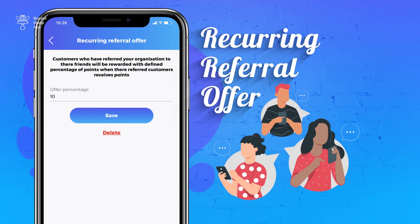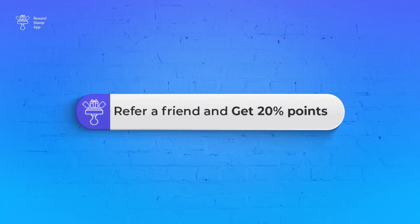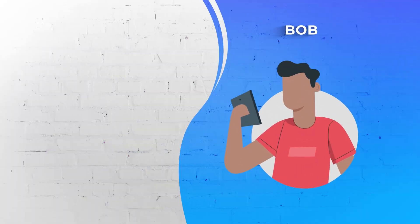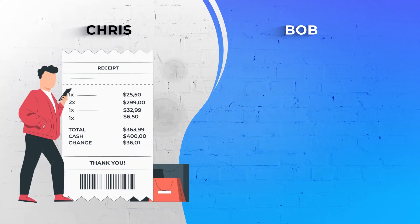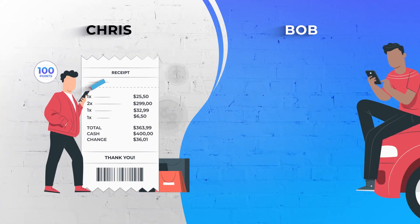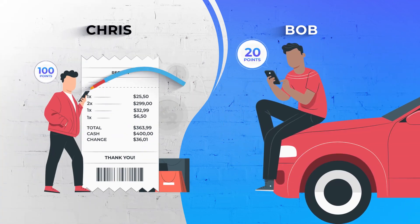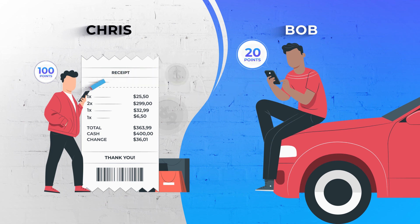For example, you set an offer like refer a friend and get 20% points. Now if Bob refers his friend Chris, every time Chris buys something Bob will receive referral points. Let's say Chris buys something and receives 100 points — Bob will then receive 20 points.